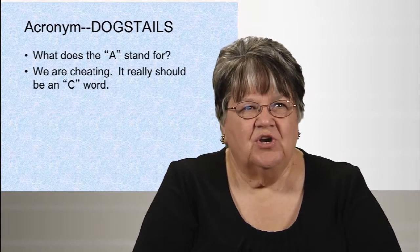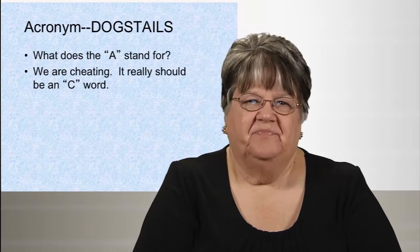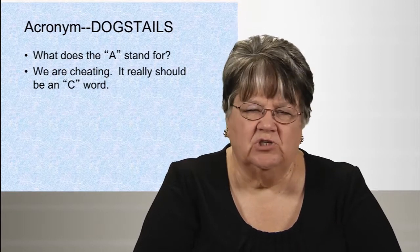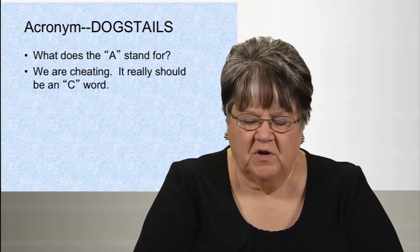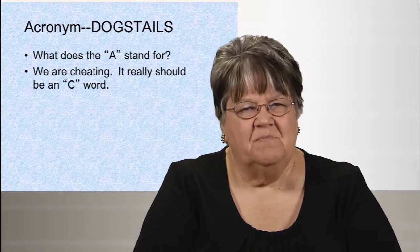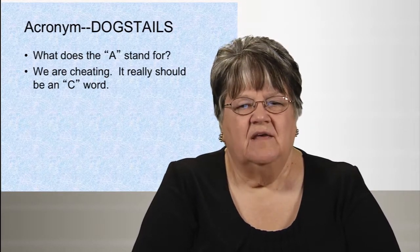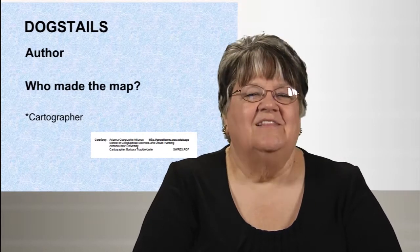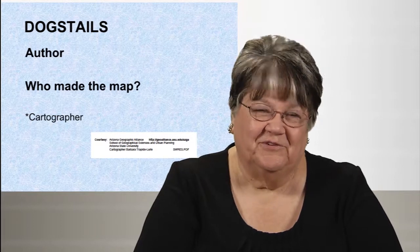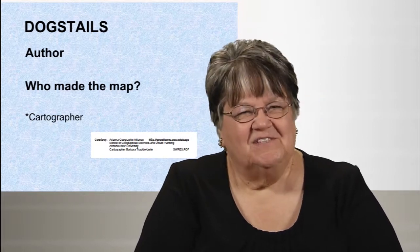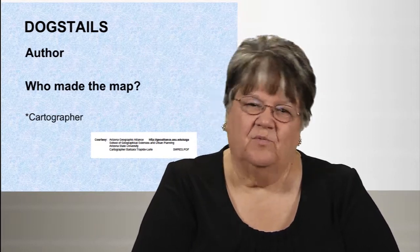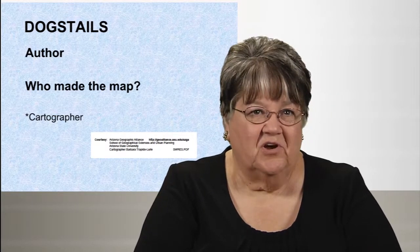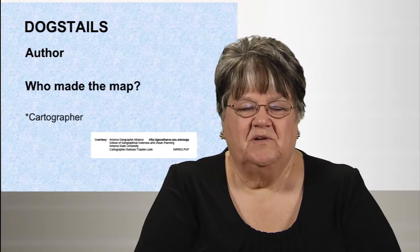The A in Dog's Tales — we're going to cheat a little bit. It should be a word starting with C, but small children won't remember it. So we're going to use the A word: 'author,' meaning who makes the map. The C word is 'cartographer.' So the author is who makes the map, and what they're really called is a cartographer. Our particular cartographer on the example is Barbara Tripitalluri.